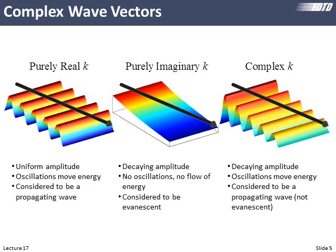The wave vector can be a complex number. When purely real, we're talking about a pure oscillation without any decay. When purely imaginary, we're talking about pure decay like the evanescent field outside of a waveguide. In general it's complex, meaning it oscillates and decays simultaneously. These are the only three behaviors an electromagnetic field can exhibit, because the solution to the wave equation is complex exponentials.